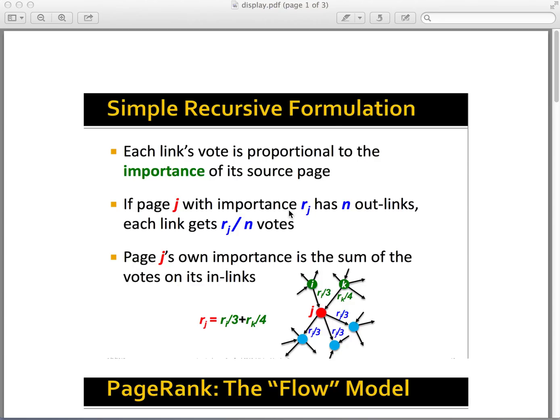Given a web graph with n nodes where the nodes are pages and the edges are hyperlinks, each link's vote is proportional to the importance of its source page. If page j has importance rj and has n outlinks, each link gets rj over n votes.